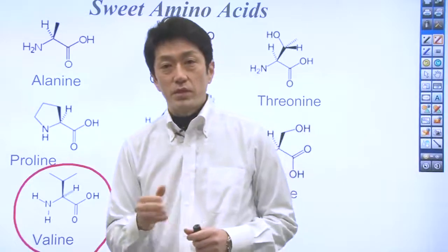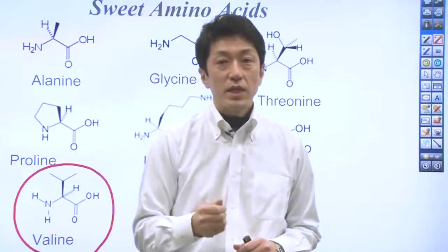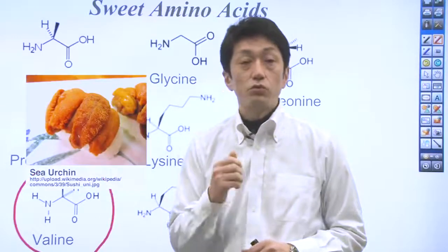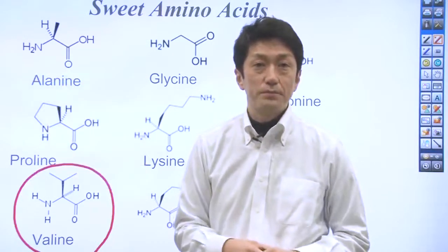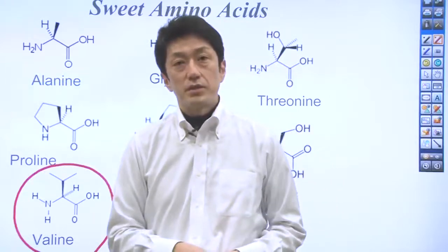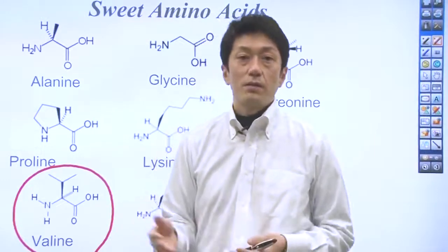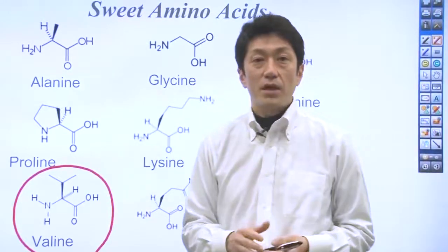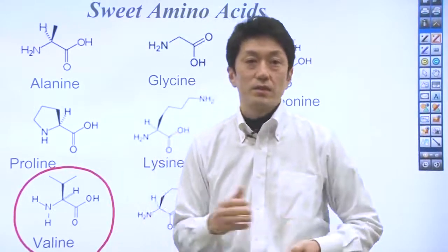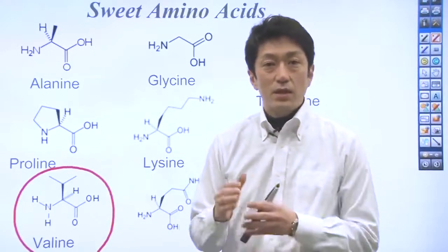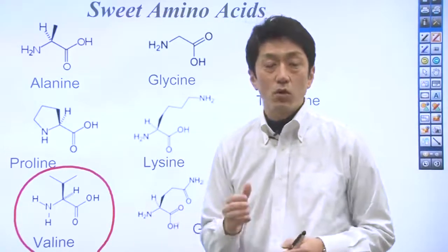The combination of amino acids in a food determines its taste. A good example is the taste of sea urchin — we call it uni in Japanese, and it is a popular topping on Japanese sushi. Sea urchin contains diverse amino acids such as glutamic acid, glycine, alanine, valine, and methionine, as well as the umami nucleotide components inosine and guanylic acid.